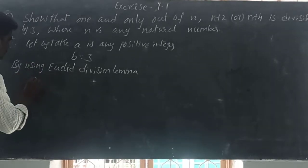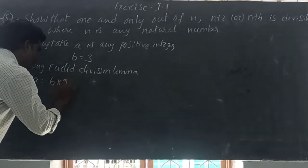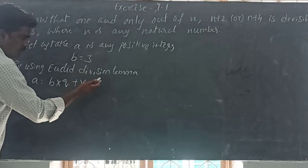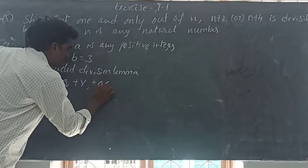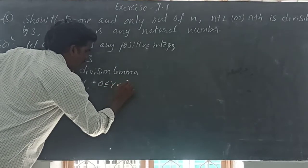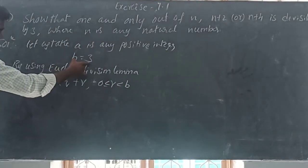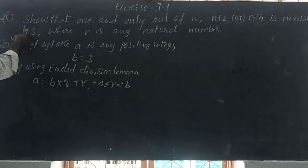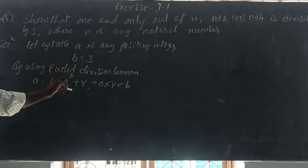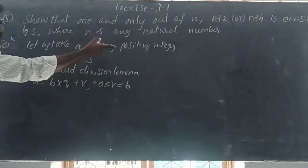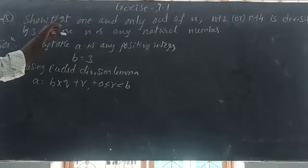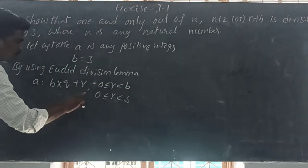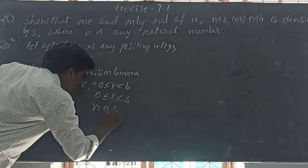Euclid's Division Lemma: A is equal to divisor into quotient plus remainder. What are the conditions of the remainder? It is greater than or equal to 0 and less than the divisor. So 0 is less than or equal to R, less than B. Here, what is B? The divisor is 3. So 0 is less than or equal to R, less than 3. The values of the remainder are 0, 1, 2.